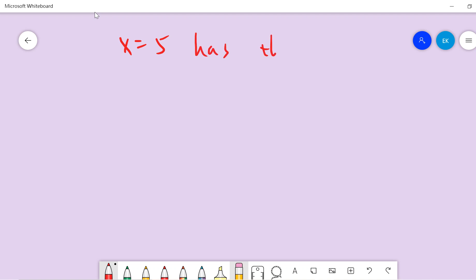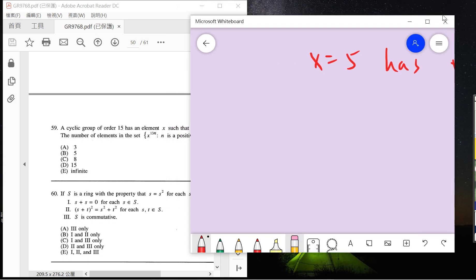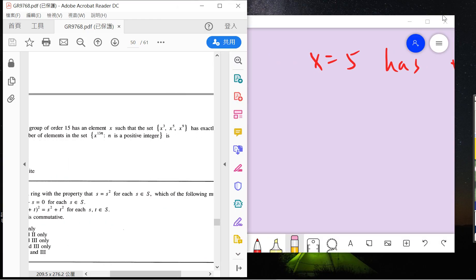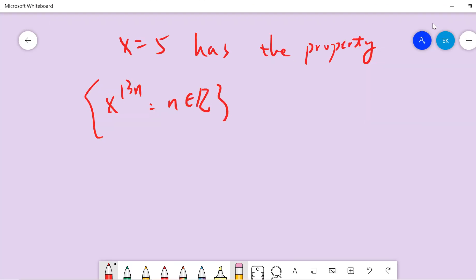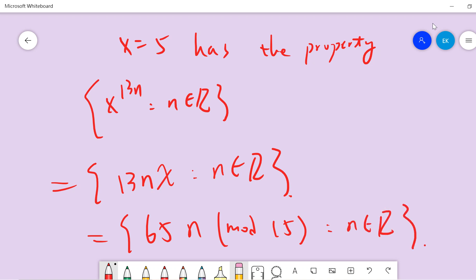x is 5 since 15, 0, and 25 has the property. Now they ask you about x to the 13n where n is a positive integer. So basically in our notation, this is 13n times x, so this is 65n modulo 15.